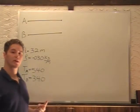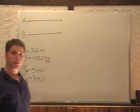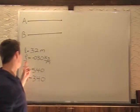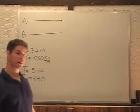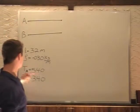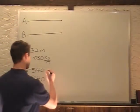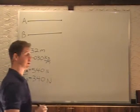In this problem we have two wires, one above the other. We're told that both have a length of 32 meters and both have a mass per unit length, a density of 0.030 kilograms per meter. The tension in the first one is 540 newtons. The tension in the second one is 340 newtons.